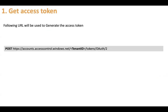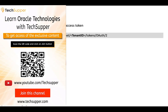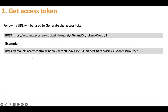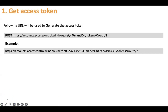We have the complete token URL to get the access token. This is a POST API and the URL would be: https://accounts.accesscontrol.windows.net/{tenantID}/tokens/OAuth/2. So the URL looks like this — accounts.accesscontrol.windows.net, then whatever tenant ID you pass in the path parameter, and then /tokens/OAuth/2.